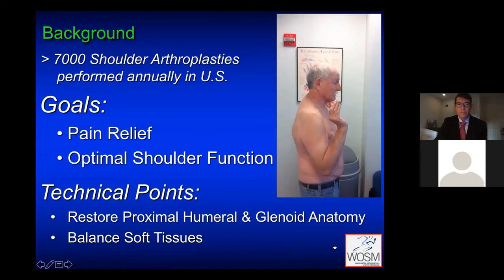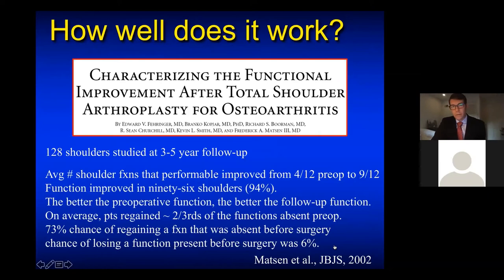How well does it work? This is a study now about 20 years old from the University of Washington in Seattle. They looked at 128 shoulders at three to five year follow-up and found that on average patients regained two-thirds of the functions they didn't have before surgery — a 73% chance of regaining absent function, and only a 6% chance of losing a function they had before surgery. These are good surgeries that are dramatically effective in improving patients' quality of life.